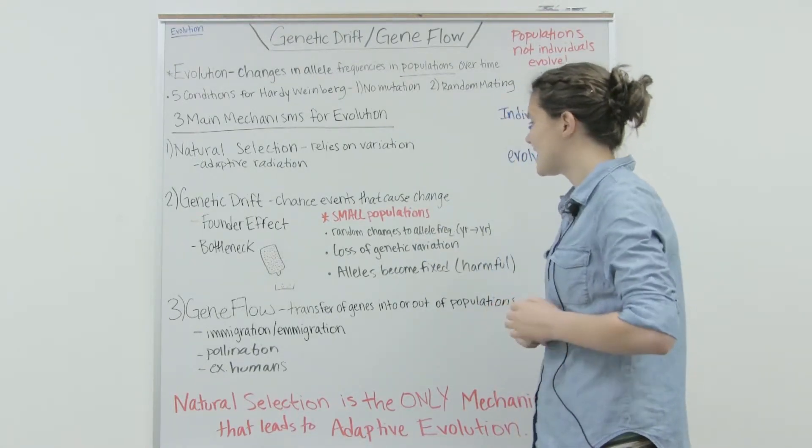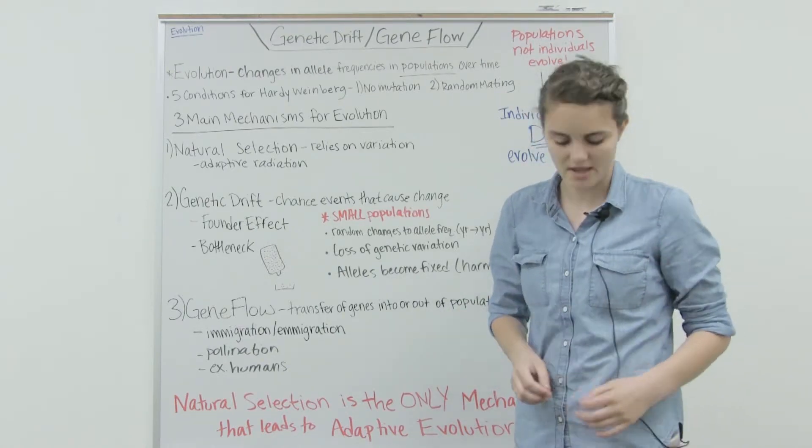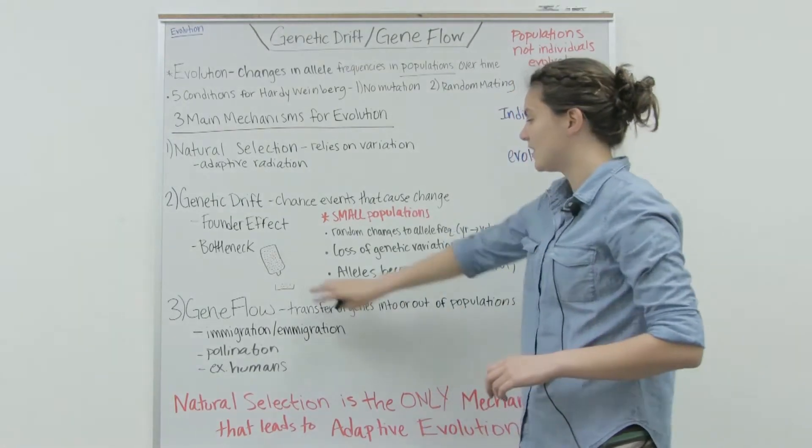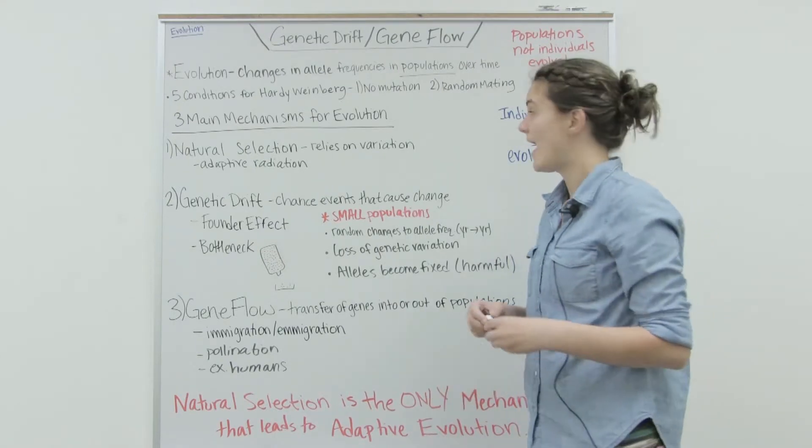Another thing is that genetic drift results in the loss of genetic variation. In this example we lost the blue allele, and so now we have less alleles in our population and less genetic variation.